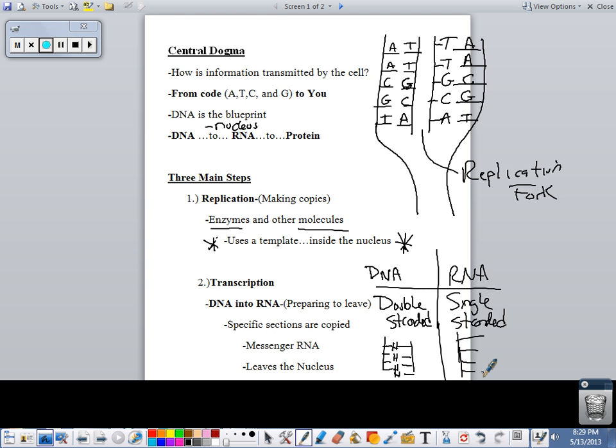And one other thing is DNA has A, T, adenine, thymine, cytosine, guanine. Here it has adenine, it doesn't have thymine, it has something called uracil. Then it has cytosine, guanine. Very similar. But it doesn't use thymine, uses uracil instead.